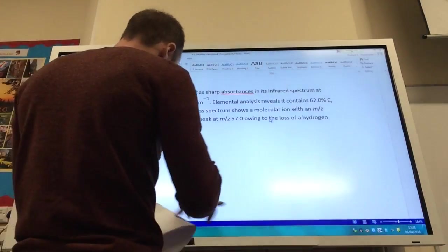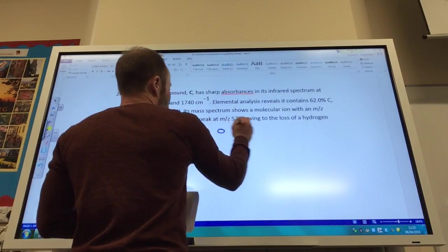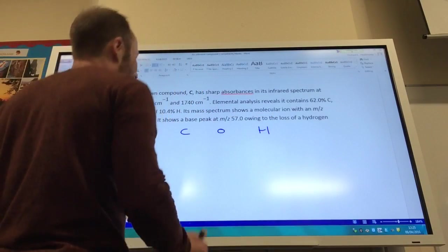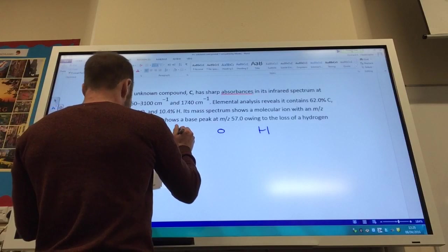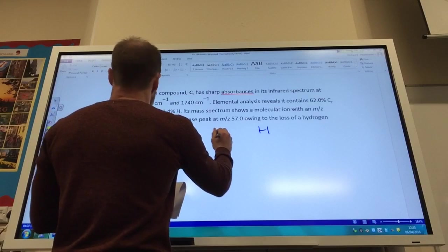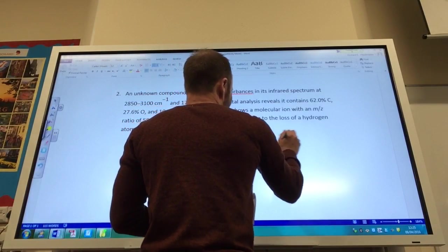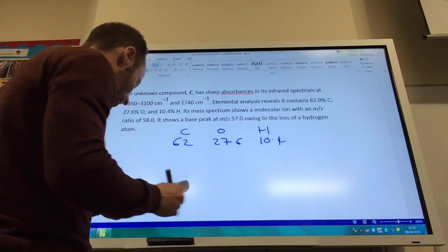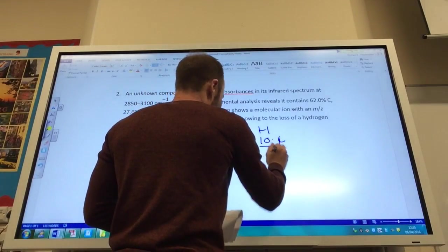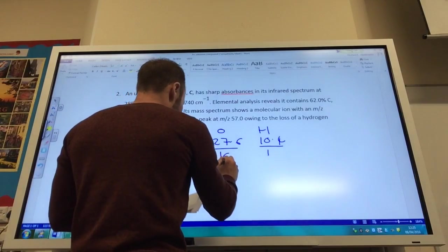I've got carbon, oxygen, and hydrogen. It's given me the information for all of them, so I've got 62% carbon, I've got 27.6% for oxygen, and that leaves me with 10.4% for hydrogen. Divide this by 12, that by 16, and that by 1, and you get a ratio of 5.17 to 1.725 to 10.4.